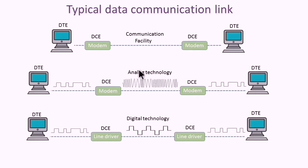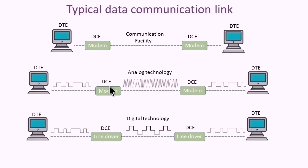If the communication facility is analog technology like the conventional telephone line, the modem is used to modulate the digital data to analog frequency, so it can pass easily through the analog system to the other modem, which will demodulate the signal back to digital. In the case of a digital communication channel, a line driver is used instead of a modem.